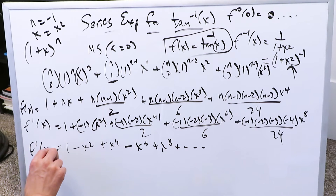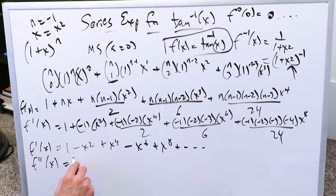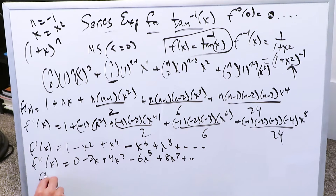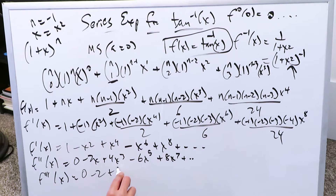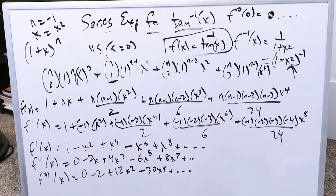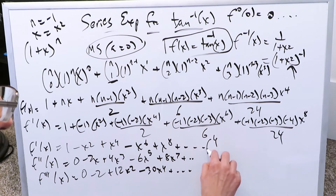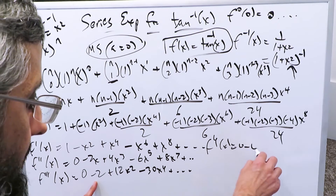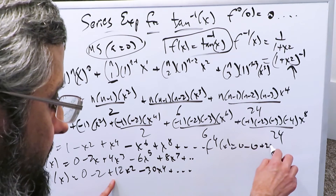Now the second ordered derivative is easy — it's just the derivative of the first: 0 minus 2x plus 4x cubed minus 6x to the 5 plus 8x to the 7 onwards. The third ordered derivative is just the derivative of that: 0 minus 2 plus 12x squared minus 30x to the 4. We don't need to write anymore because most of these terms will zero out. The fourth ordered derivative: derivative of 0 is 0, derivative of minus 2 is 0, and the derivative of 12x squared is 24x.